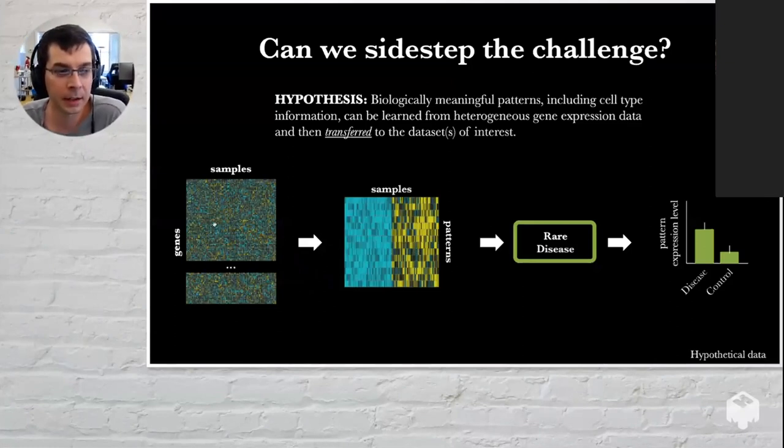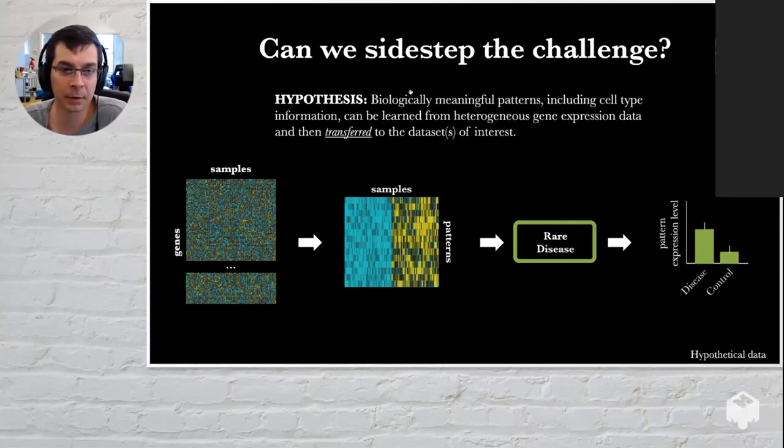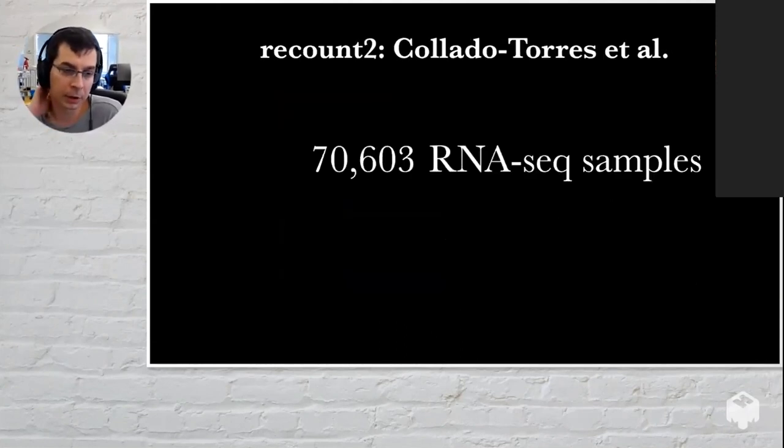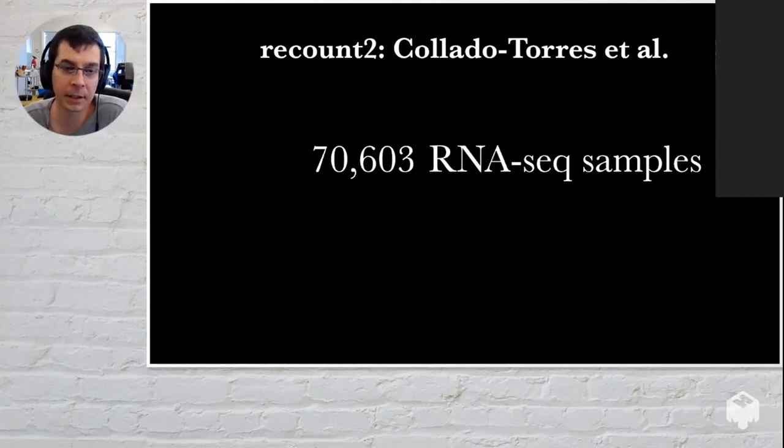Once you can download all that data, you can build a matrix of genes by many samples. What Jackie expected was that the biologically meaningful patterns for rare diseases, including cell type information, could be learned from this generic data downloaded from the internet. You then get these patterns. These patterns would be reusable. Some would be relevant for the rare disease, some wouldn't be. So you take these patterns into your rare disease data set, look at the expression level of those patterns, and examine which patterns are potentially associated with an outcome that you care about, maybe case control status or disease severity.